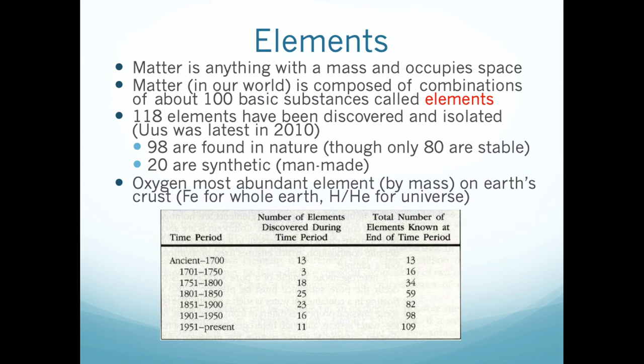Elements are a way of distinguishing different types of atoms. If you have an atom of one element, it's just going to be different from an atom of another element. We'll understand how they're different throughout this chapter, but for now, understand that elements are the ways we classify different types of atoms.